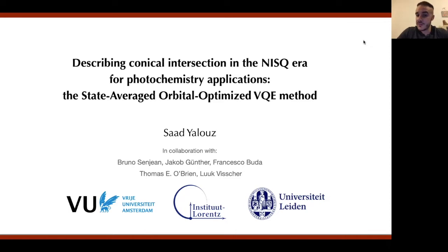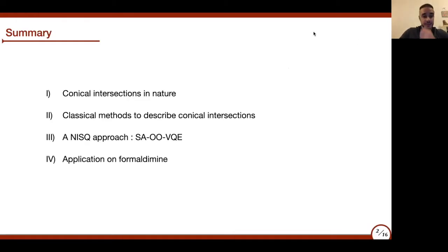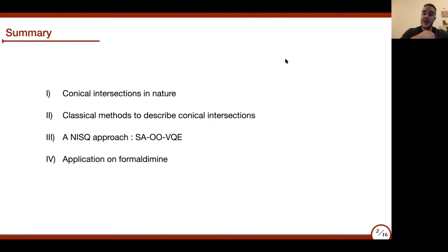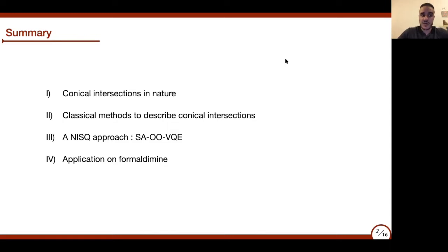This is a NISQ-friendly approach specifically dedicated to the description of conical intersections on near-term quantum devices. In the first part of this talk, I will take time to motivate why conical intersections are so important in quantum chemistry and in nature, speaking about two different phenomena in which conical intersections are known to play a key role. In the second part, I will talk about classical methods that could be used to describe conical intersections, and show the limitations of these methods.